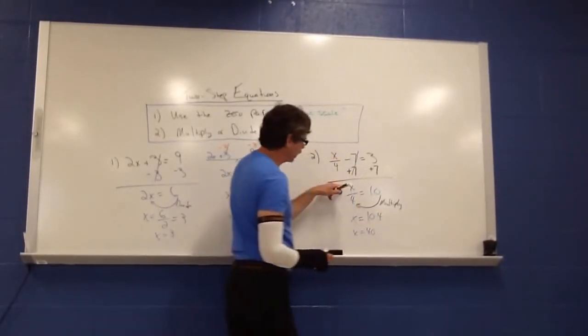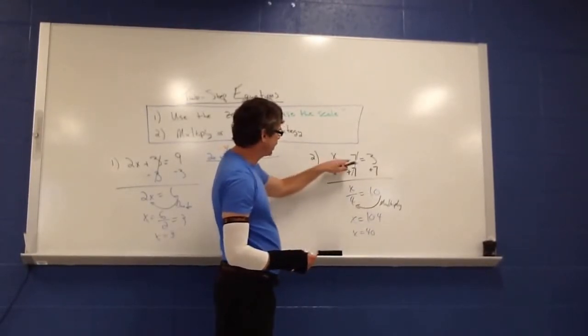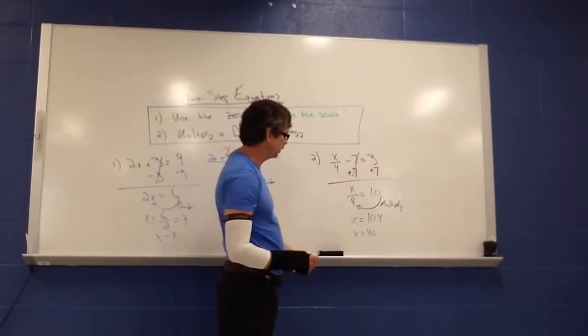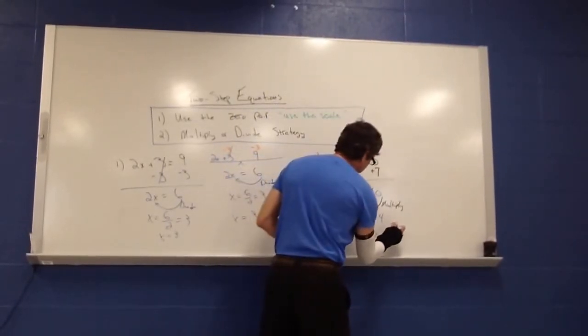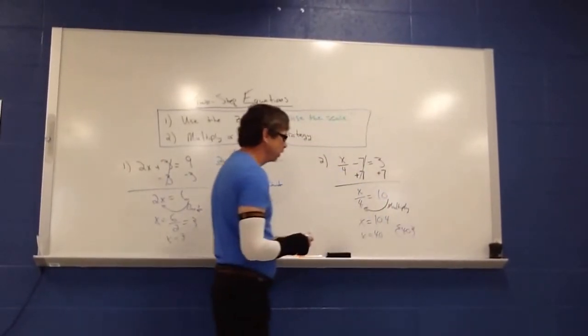So if you check that, 40 divided by 4 would indeed give me my 10. And 10 minus 7 does give me 3. So that problem does check out. So 40 would be my solution, and we can write it in a solution set form if we want to.